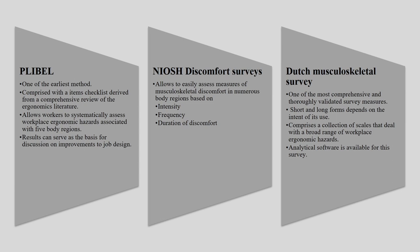For musculoskeletal injury assessment, we majorly talk about PLIBEL, the NEOS Discomfort Survey, and the Dutch Musculoskeletal Survey. These are three very strong tools used at the initial level to identify and assess musculoskeletal injuries. These are not the only three tools — there are many others. Depending on the kind of objectives you have, you need to identify which tool is necessary. We will cover basic information about these tools in this class.